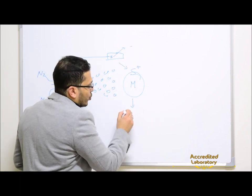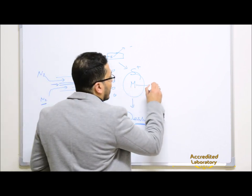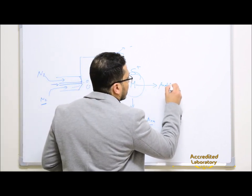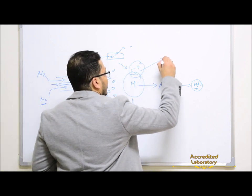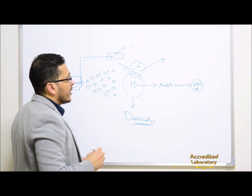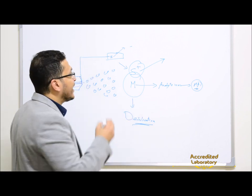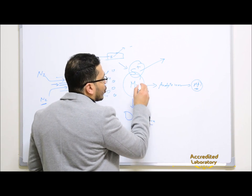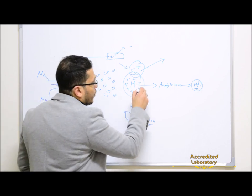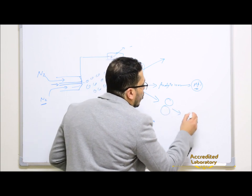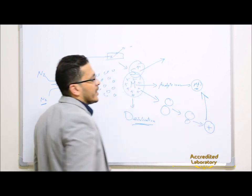After that, a desolvation process removes the solvent molecules, because only analyte ions should be transferred to the mass analyzer. These solvent molecules will be evaporated by the effect of temperature and drying gas, resulting in a decrease of the charged droplet radius and increase of charge density. Repulsion between the like charges becomes higher than the surface tension forces of the droplets, breaking the droplets into smaller droplets, resulting in ejection of ions.